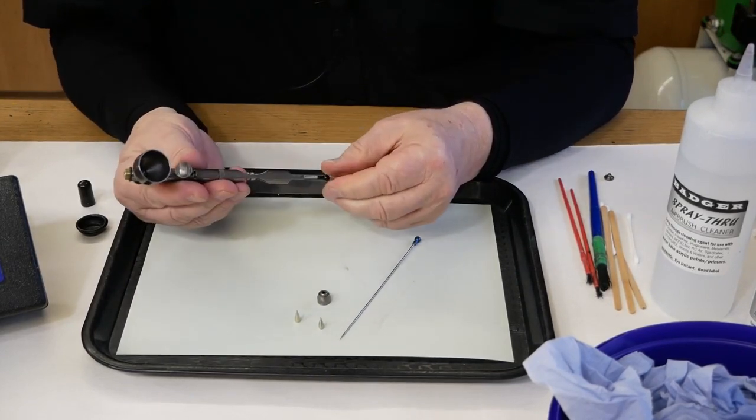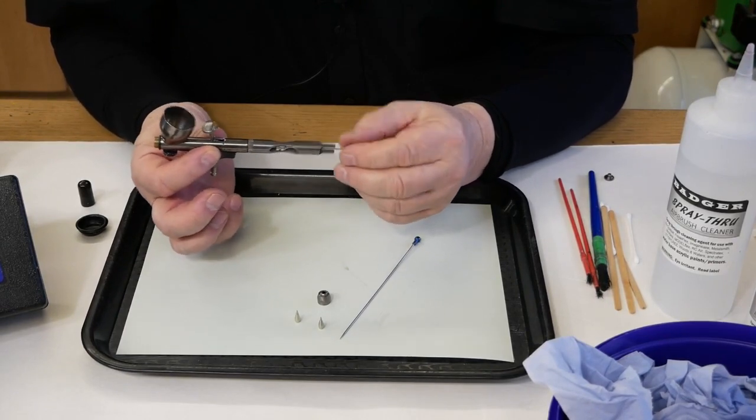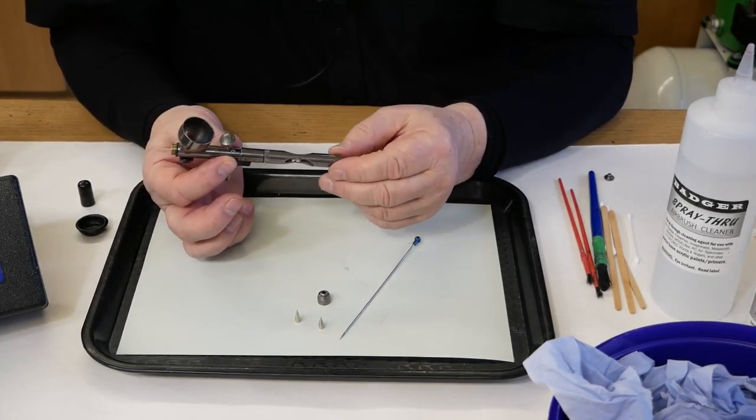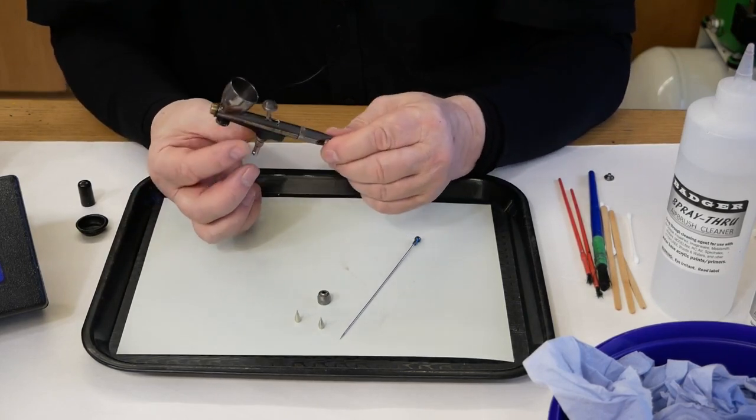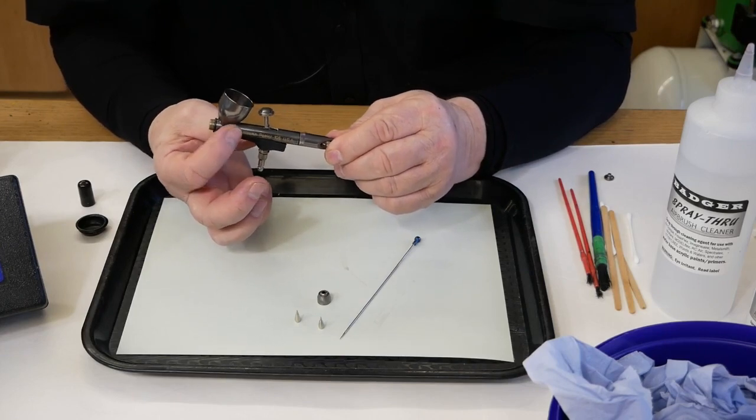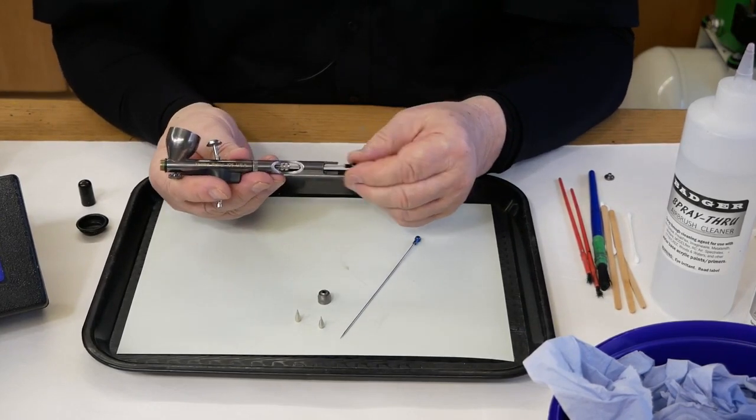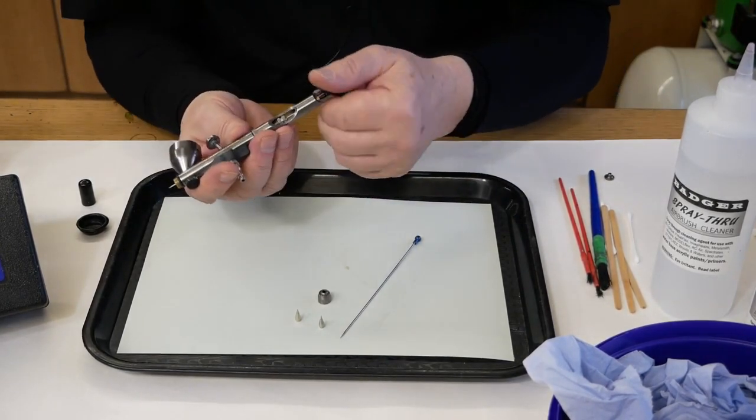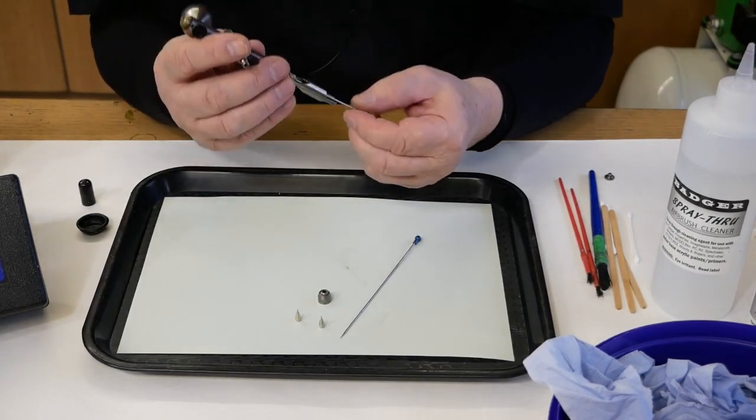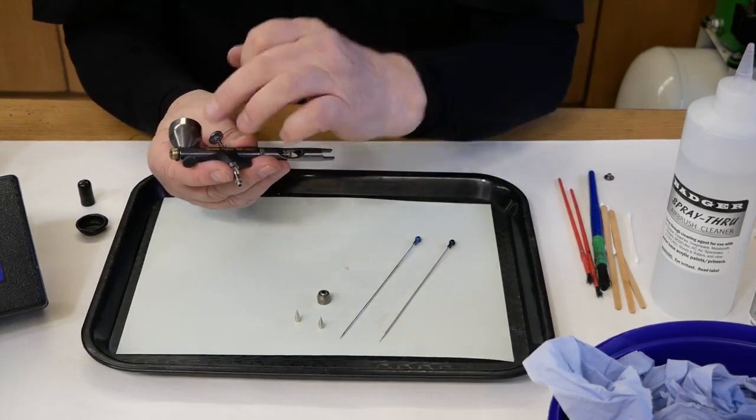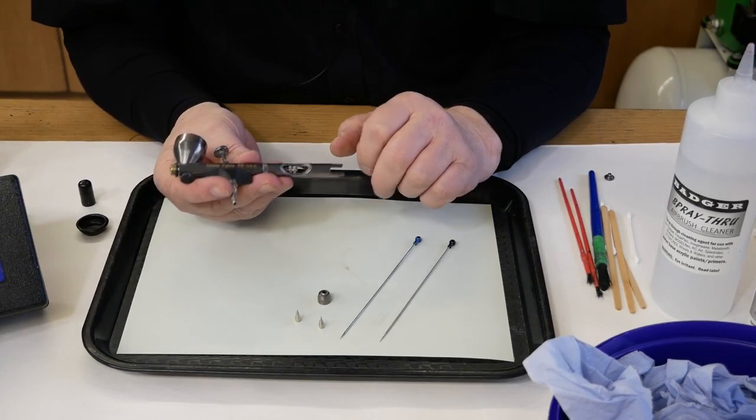But one of the things I've also noticed with taking the needle in and out, there's no resistance and there should be some resistance in this area where the needle bearing is, or was in this case. But the needle has just fallen in and out of the airbrush. I'm assuming the needle bearing has been damaged or it's disappeared.